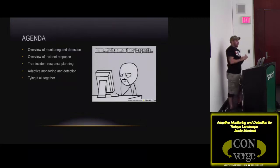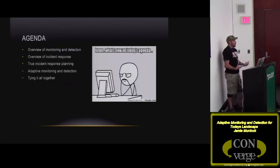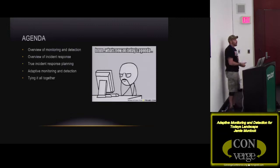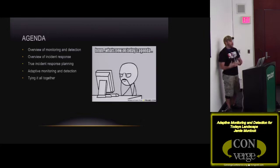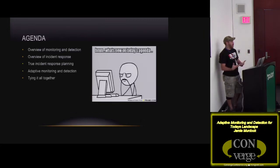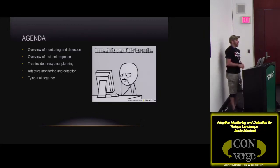So, the agenda. We're going to do an overview of monitoring and detection — that's going to go over what used to be the way to do it, unfortunately the way some people still do it, and then we're going to talk about a good way to do it. Same with incident response. Then we're going to go over some really good things that should be in an incident response plan. After that, we're going into the meat and potatoes of adaptive monitoring. And then we're going to tie it all together, and if there's time, I'd actually like to have a discussion.